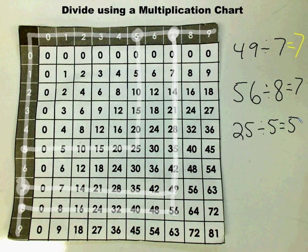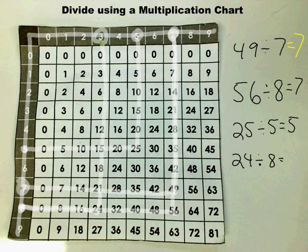And do another example. 24 divided by 8. You go ahead and you find your divisor, which is 8 on your multiplication chart. You follow it over until you find 24. Then you go straight up. So 24 divided by 8 is 3.